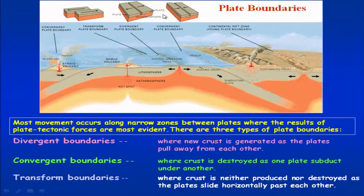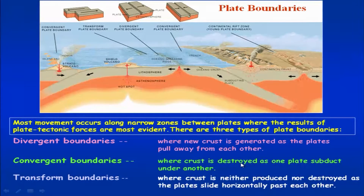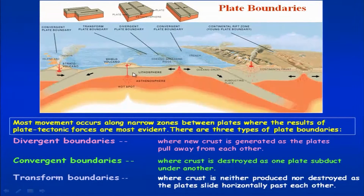These are the key points to remember: three types of plate boundaries — divergent plate boundary where new crust is generated, hence termed constructive plate boundary; convergent plate boundary where the crust is destroyed, hence termed destructive plate boundary; and transform plate boundary where crust is neither produced nor destroyed. So the two plates just slide past each other.